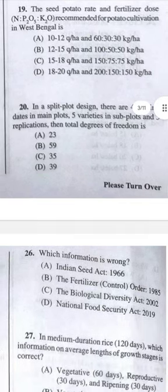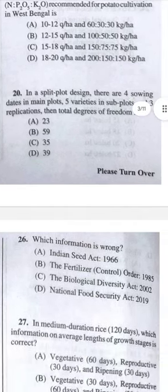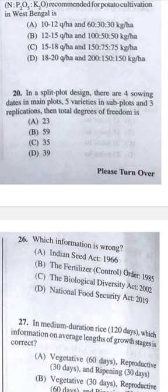Question 20: In a split plot design with 4 treatments in the main plot, 5 varieties in the subplot, and 3 replications, the total degree of freedom — multiply 4 × 5 × 3 minus 1 = 59, answer B.